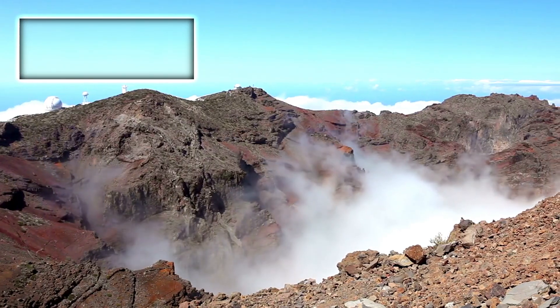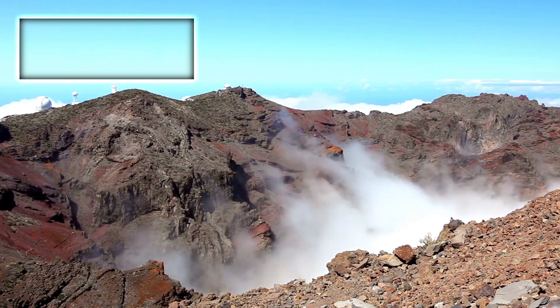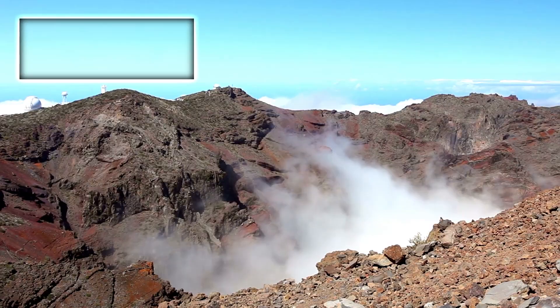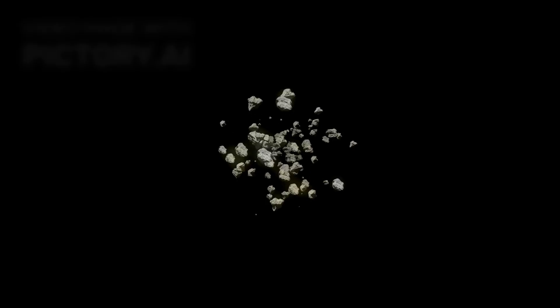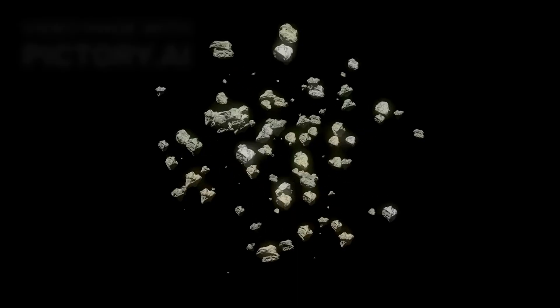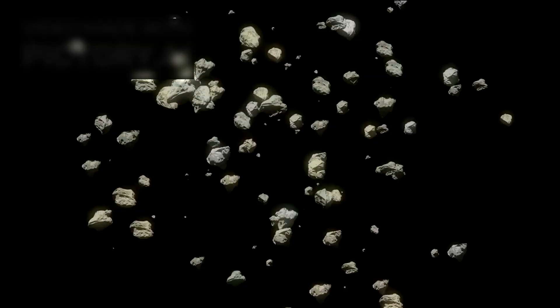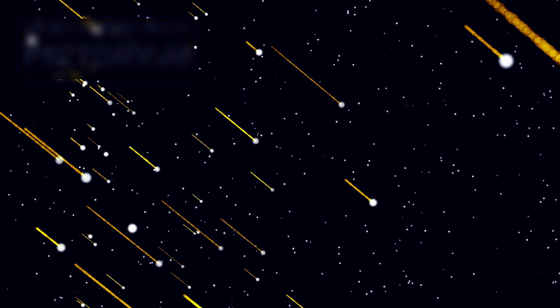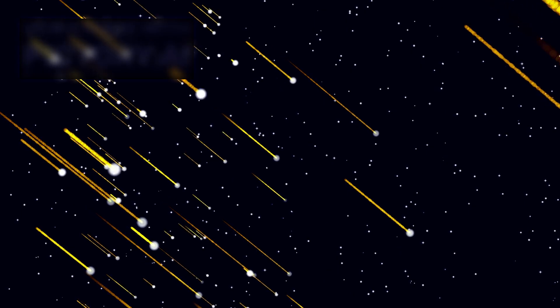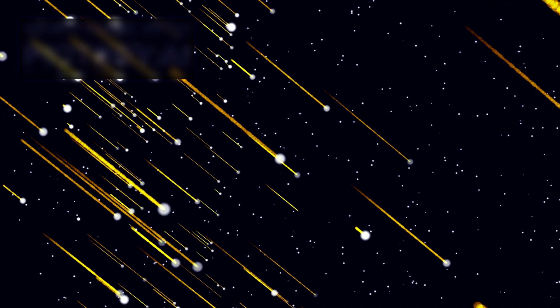Unlike any asteroid or comet previously observed, Oumuamua's characteristics defied conventional explanations. Comets are usually distinguished by their glowing tails formed by outgassing, while asteroids are rocky and obey predictable orbital patterns dictated by gravity. Oumuamua, however, displayed no visible tail, no signs of gas release, and yet it accelerated in a way that could not be explained solely by gravity.